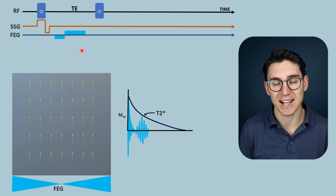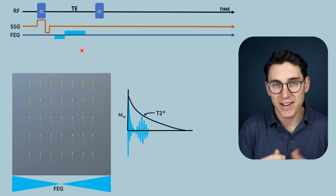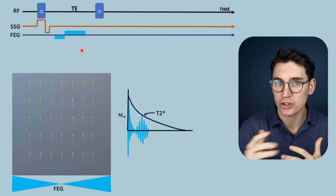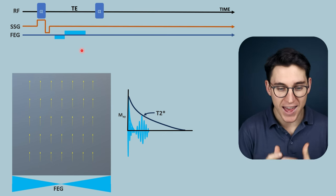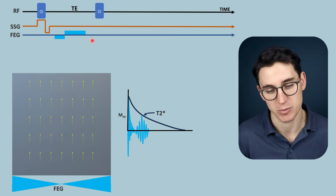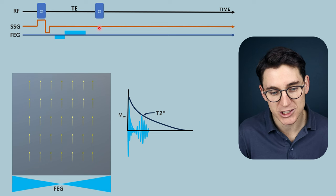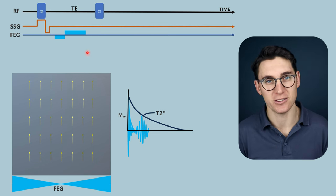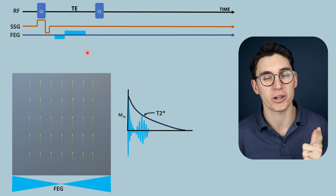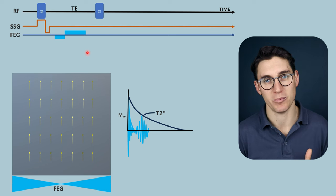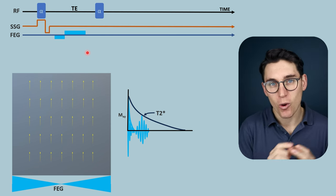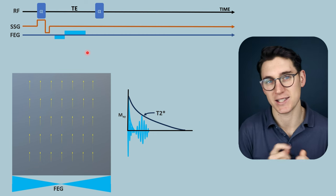Short TRs allow us to image rapidly — the faster we acquire, the less motion artifact and the quicker the scan time. However, we still need good signal, appropriate contrast within the image, reduced noise, and good spatial localization to produce an adequate diagnostic image.